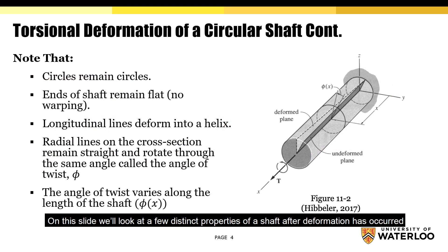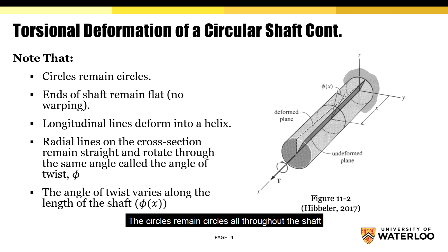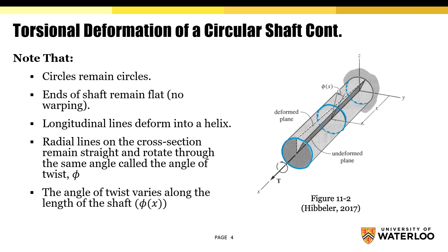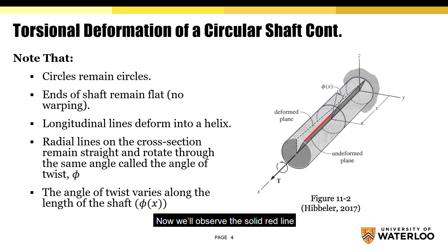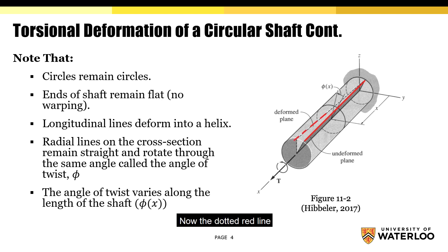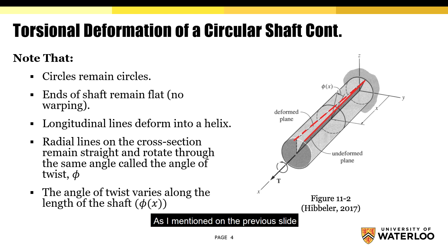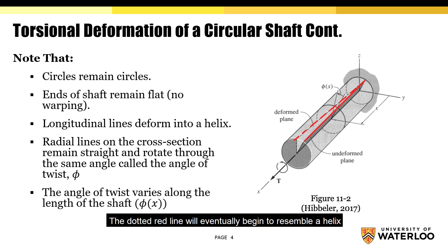On this slide we'll look at a few distinct properties of the shaft after deformation has occurred. Notice how the circles remain circles all throughout the shaft — there is no warping at the beginning, middle, or end. The solid red line represents the longitudinal line after a torsional moment has been applied. If you were to continue applying torque on the shaft, the dotted red line will begin to resemble a helix.